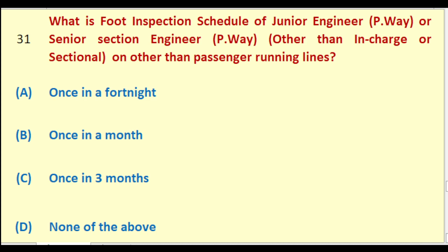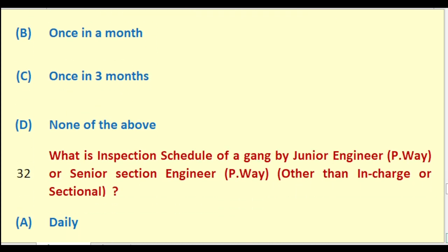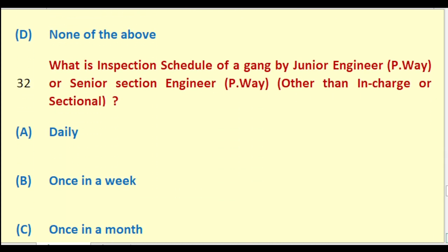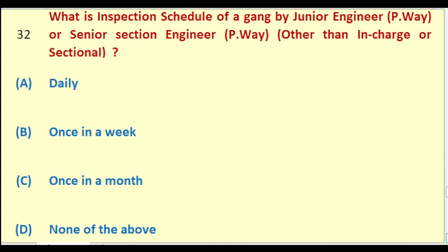What is the inspection schedule of a gang by Junior Engineer Permanent Way other than in charge or sectional? Options: daily; once in a week; once in a month; none of the above. The right answer is: once in a week.